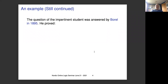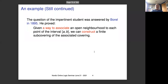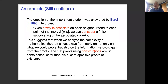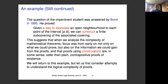This question was answered by Borel in 1895. He proved that given a way to associate an open neighborhood to each point in the interval AB, we can construct a finite sub-covering of the associated covering. This suggests that when analyzing the complexity of mathematical theorems, the focus was early on not only on proving existence, but preferably on finding a way to construct the objects claimed to exist. That challenge was taken up by Borel, who made this kind of construction. We will return to this example later.